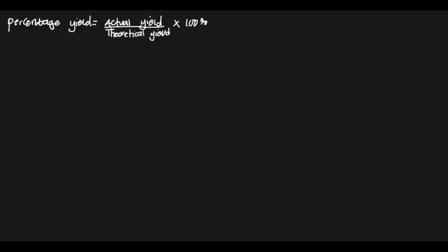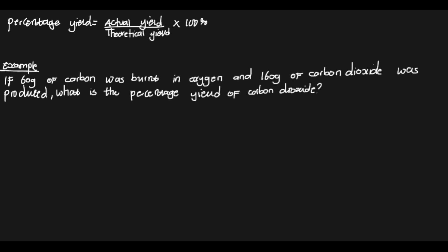Let's look at the first example. If 60 grams of carbon was burned in oxygen and 160 grams of carbon dioxide was produced, what is the percentage yield of carbon dioxide? The first step is to write the balanced chemical equation. We have carbon reacting with oxygen — this is a combustion reaction — and the product is carbon dioxide.